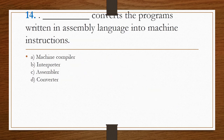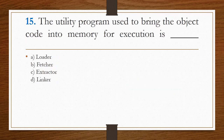What converts programs written in assembly language into machine instructions? The answer is assembler, option C. The utility program used to bring the object code into memory for execution is called a loader. Option A is the right answer.